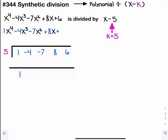Next, we're going to multiply the k value times what we dropped down. So five multiplied by one is five. We're going to add those together. So negative four and five make positive one.